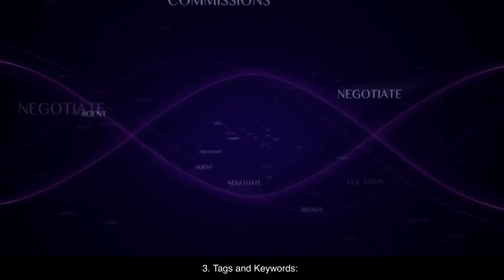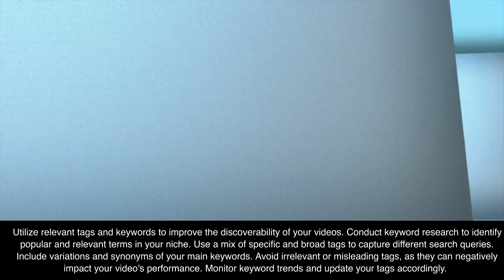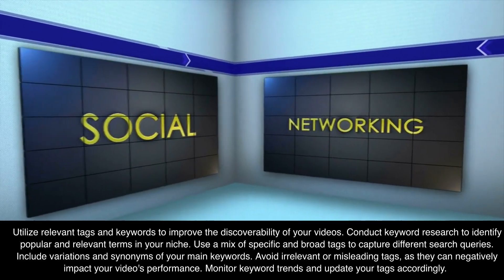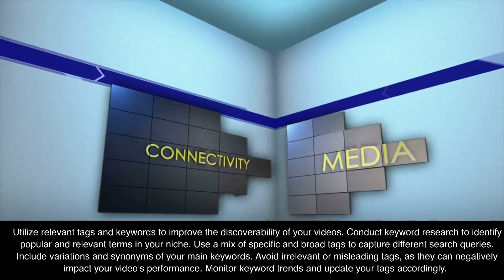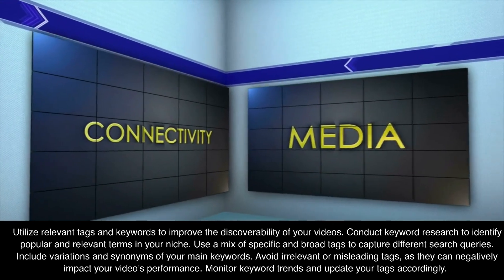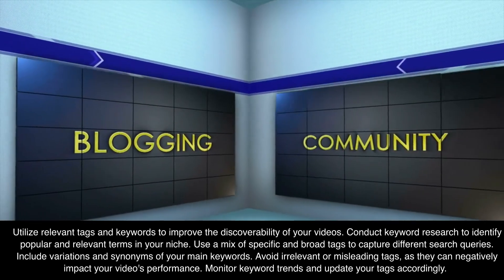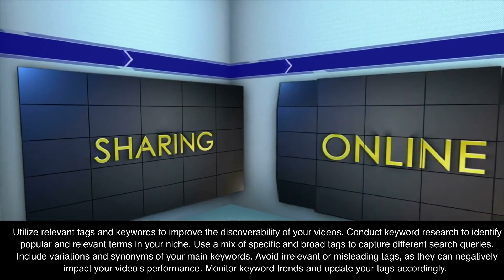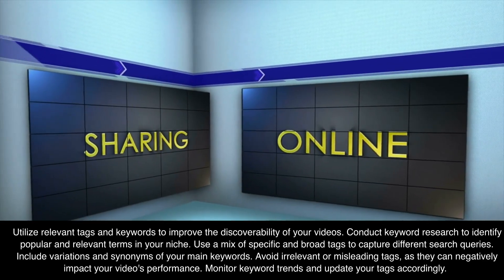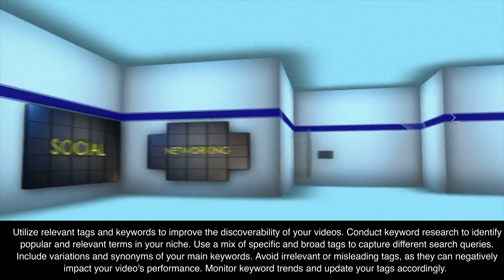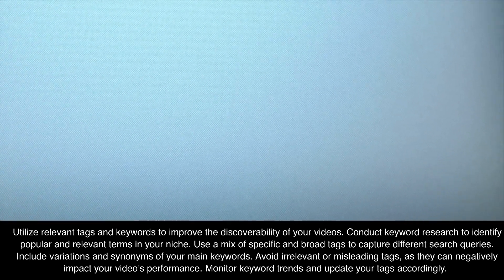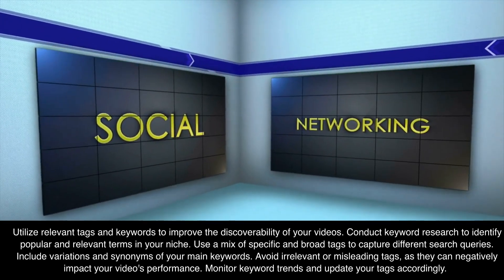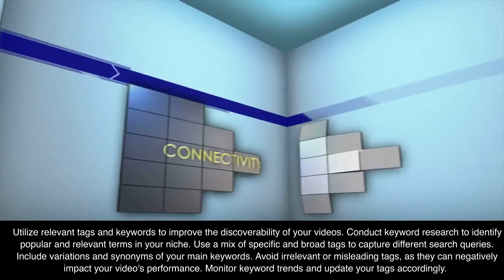3. Tags and Keywords. Utilize relevant tags and keywords to improve the discoverability of your videos. Conduct keyword research to identify popular and relevant terms in your niche. Use a mix of specific and broad tags to capture different search queries. Include variations and synonyms of your main keywords. Avoid irrelevant or misleading tags, as they can negatively impact your video's performance. Monitor keyword trends and update your tags accordingly.